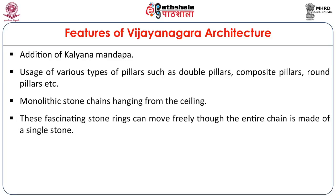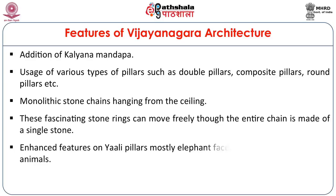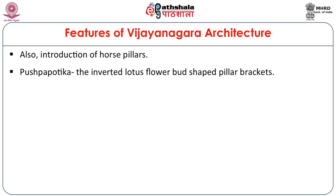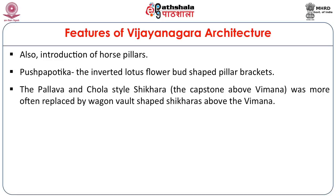Monolithic stone chains hanging from the ceiling — these fascinating stone chains were all made from a single stone but still could move freely. The feature of Yali ornamented on the pillars, where you could see a rider trying to control a rampant Yali which is crushing another creature beneath it. The Pushpapotika — the inverted lotus flower, bird-shaped pillar brackets. The Pallava and Chola style Shekhara, the capstone above the Vimana, was replaced by the wagon-vaulted shaped Shekharas.